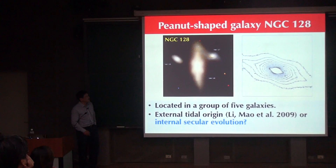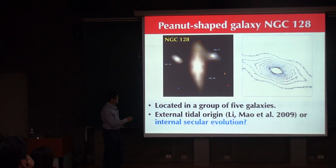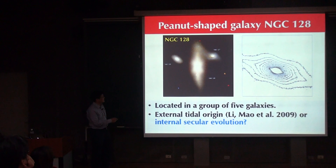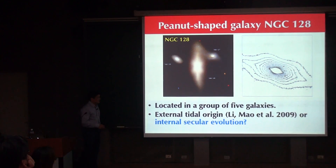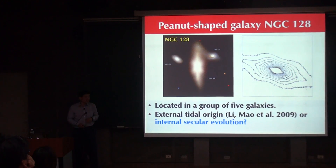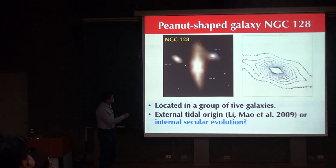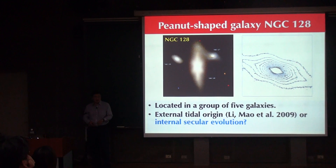Galaxies can also appear peanut-shaped. If you plot the contours of surface brightness for this spiral galaxy — which is located in a group of five galaxies, three of which are shown here — the contours resemble a peanut in daily life. This is called a peanut-shaped spiral galaxy, and these are thought to be barred spirals seen edge-on. This raises the question of whether this bar structure is caused by tidal interactions with nearby galaxies or driven by internal dynamical processes.